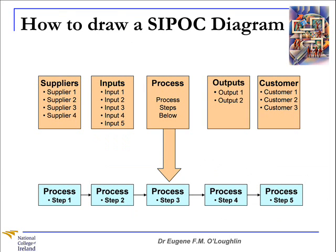So how do you go ahead and draw a SIPOC diagram? There are many variations on this, but the simplest version is like the one you see in front of you here. We have five brown boxes at the top, representing each of our SIPOC letters: Suppliers, Inputs, Processes, Outputs, and Customers. We usually break the process down into steps — I've got five high-level steps here at the bottom. Anything from four to up to seven high-level steps would be sufficient to represent the process. We go through each section one at a time to identify all the relevant elements for each part of the SIPOC diagram.